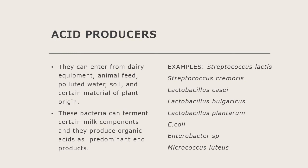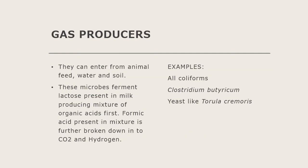Examples of acid producers are: Streptococcus lactis, Streptococcus cremoris, Lactobacillus casei, Lactobacillus bulgaricus, Lactobacillus plantarum, E. coli, Enterobacter, and Micrococcus luteus.